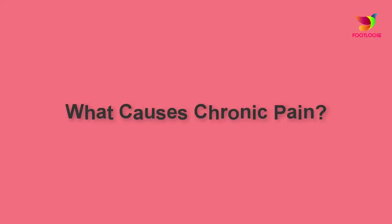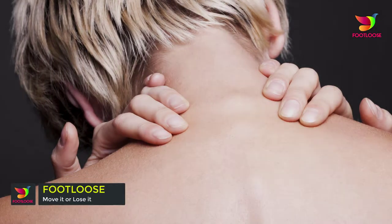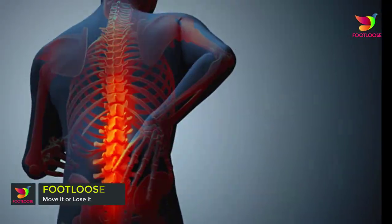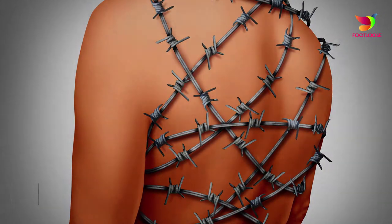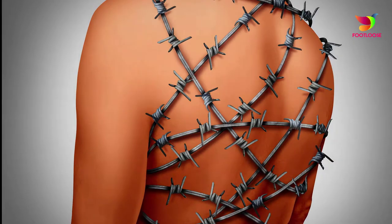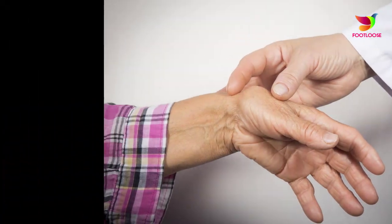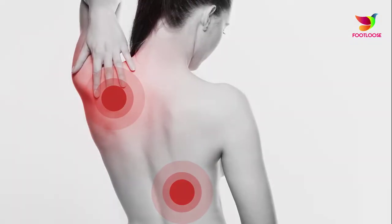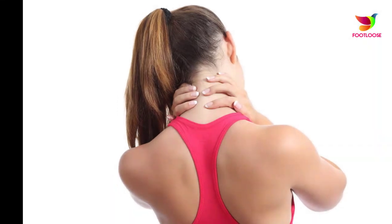What causes chronic pain? Chronic pain is usually caused by an initial injury, such as a back sprain or pulled muscle. It's believed that chronic pain develops after nerves become damaged. The nerve damage makes pain more intense and long-lasting. In these cases, treating the underlying injury may not resolve the chronic pain.